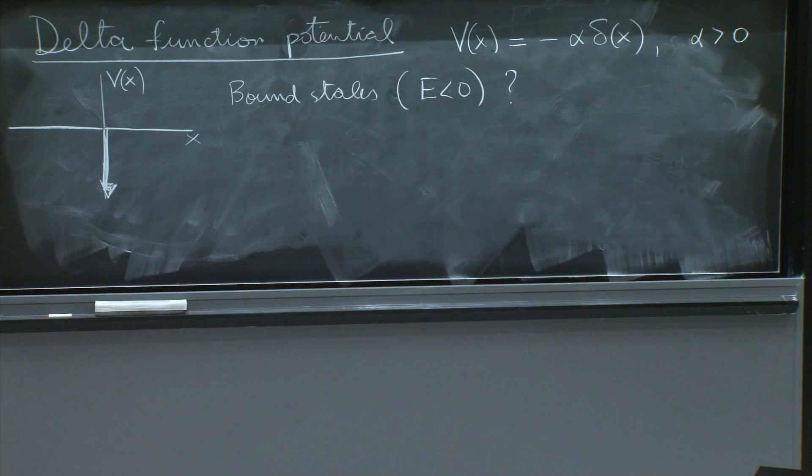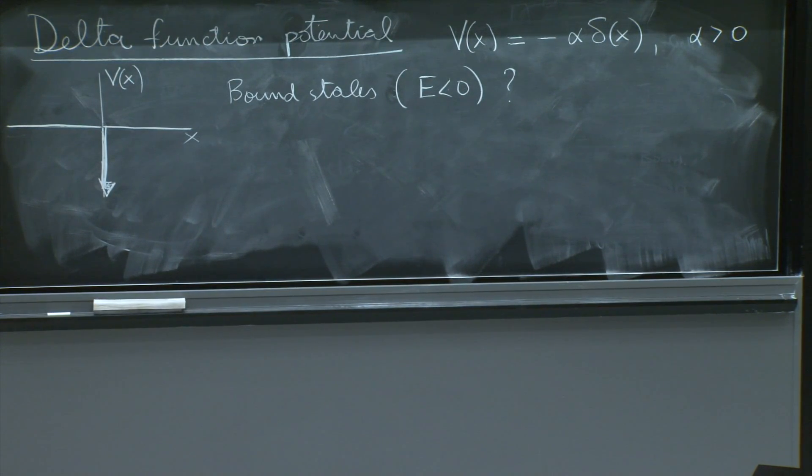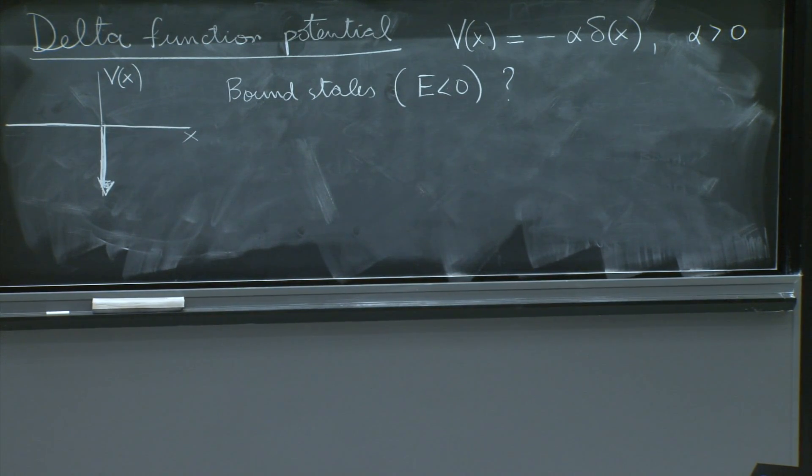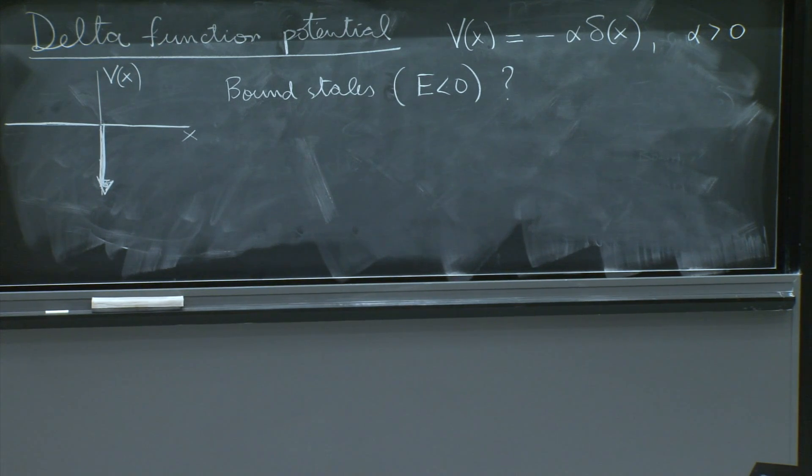If they do, how many bound states? One, two, three? Does it depend on the intensity of the delta function? Do you get more bound states the deeper the potential is? Well, we'll try to figure out.